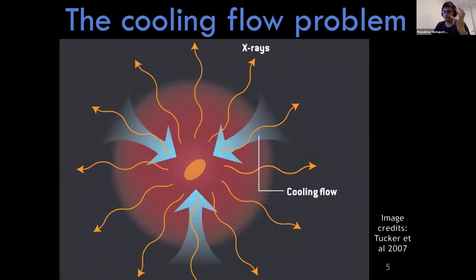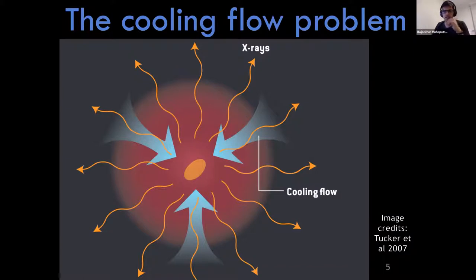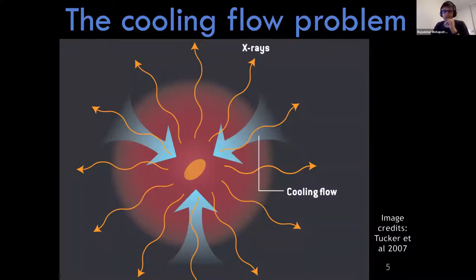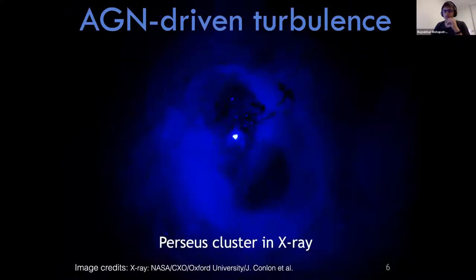From a cooling flow, if nothing arrests the gas from cooling, it will radiate away all its heat, cool to molecular cloud scales, and start forming stars. However, BCGs don't actually form many stars — they're red and dead. A lot of gas is supposed to be supplied by the cooling flow but never goes on to form stars. This is known as the cooling flow problem — something is preventing this gas from cooling, meaning there must be some other heating mechanism.